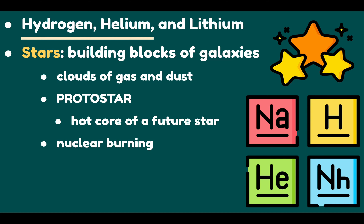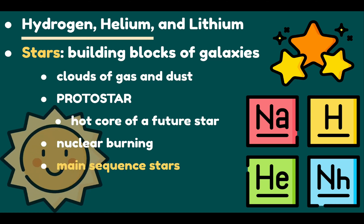Most stars, such as the Sun, belong to the main sequence. In these stars, hydrogen atoms are fused through thermonuclear reactions to make helium atoms. Massive main sequence stars burn their hydrogen faster than smaller stars. Stars like our Sun burn out hydrogen in about 10 billion years.